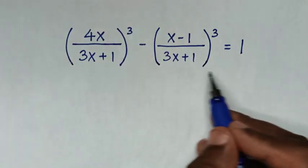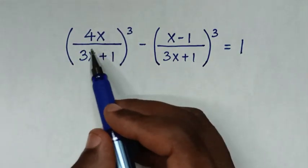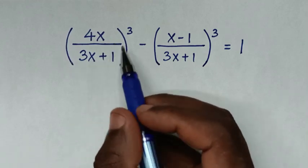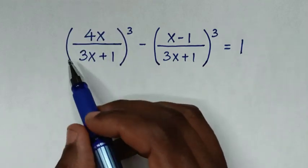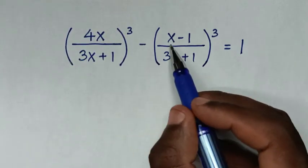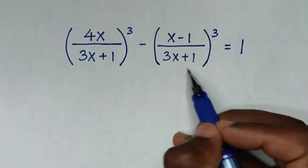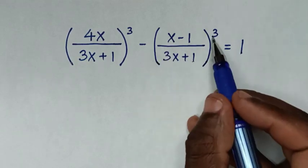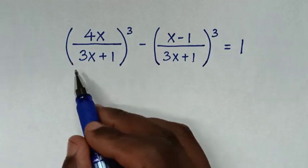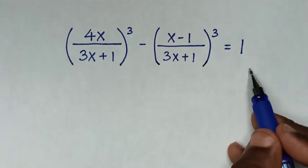You're welcome to solve this math problem, which is 4x over (3x+1)³ minus (x-1) over (3x+1)³ equals 1. We need to find the values of x from this equation.